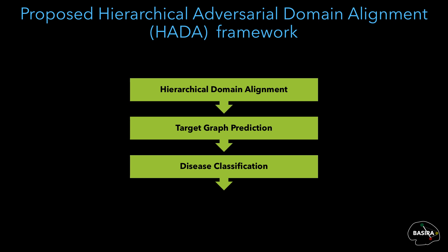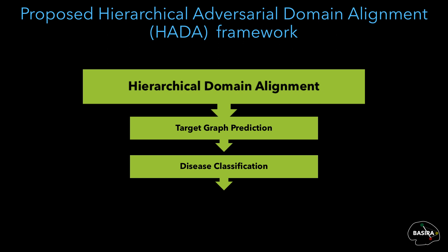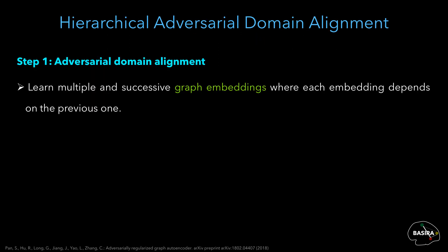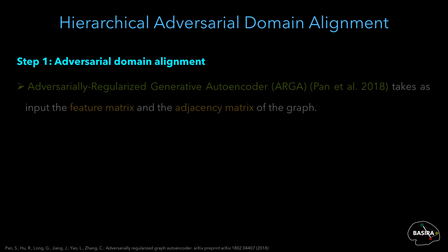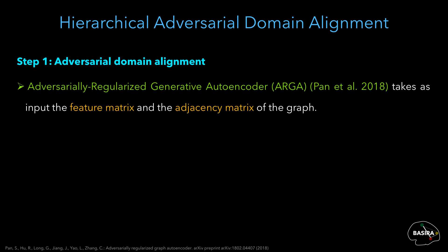Our HEDA framework comprises three key steps: hierarchical domain alignment, target graph prediction, and disease classification. In the hierarchical domain alignment step, we propose to learn multiple and successive graph embeddings where each embedding depends on the previous one. We leverage adversarially regularized generative autoencoder, or ARGA, a GAN-based method for graph embedding that takes as input the feature matrix and the adjacency matrix of the graph. To align the source to the target domain, we construct the feature matrix using the source brain graphs and the adjacency matrix using the target graphs.